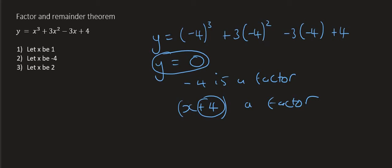I've seen some teachers show this using long division. So they would do something like x³ plus 3x² minus 3x plus 4, and then they would put x plus 4 over here. And then they would do division, and they would see if you get a remainder or not. That is mathematically correct, but it's overly complicated.